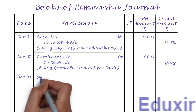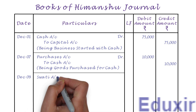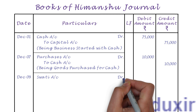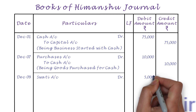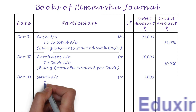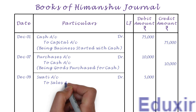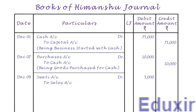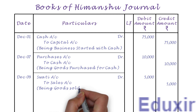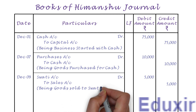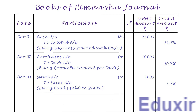Let us first record the date. Let us then record Swathi account as the debit entry and write the text DR to indicate a debit entry. Let us also write the debit amount of 5,000 rupees in the debit amount column. Leaving a margin, let us record the sales account as the credit entry and write the credit amount of 5,000 rupees into the credit amount column. Let us write the narration: being goods sold to Swathi. That completes the journalizing of this transaction.